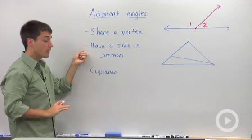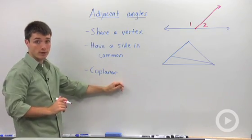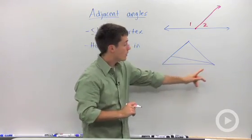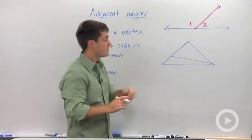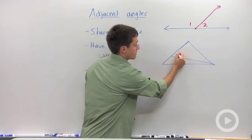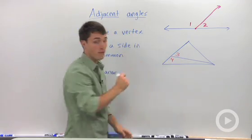Now if you're being really technical, these two have to be coplanar, which means they're on the same plane. So if I look at this triangle right here where I've drawn in a line segment, we only have two adjacent angles. I'm going to write these as three and four.